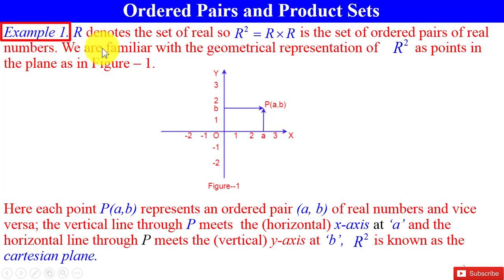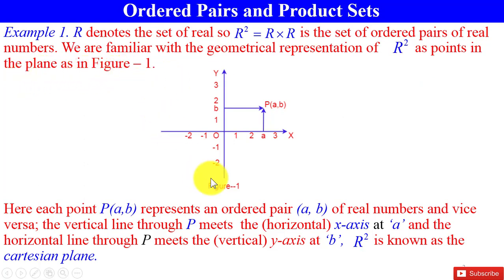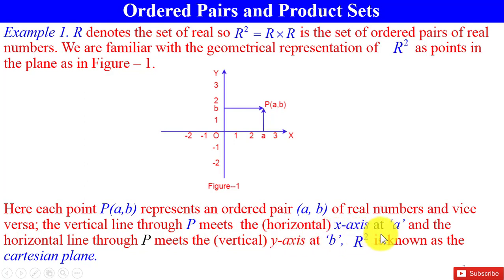Example 1: Let R denote the set of real numbers. Then R² = R×R is the set of ordered pairs of real numbers in the plane. We are familiar with the geometrical representation of R² as points in the plane. Here, each point P(A, B) represents an ordered pair (A, B) of real numbers and vice versa. The vertical line through P meets the horizontal X-axis at A.